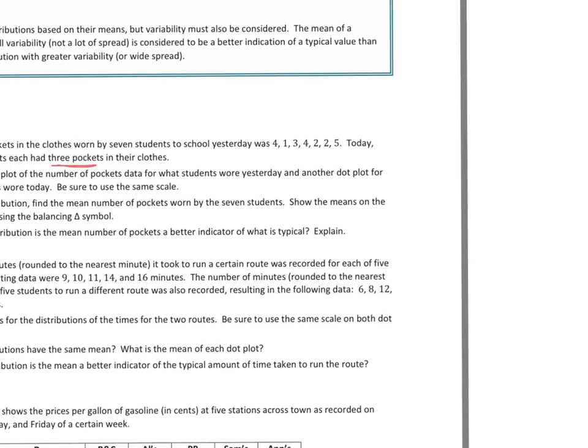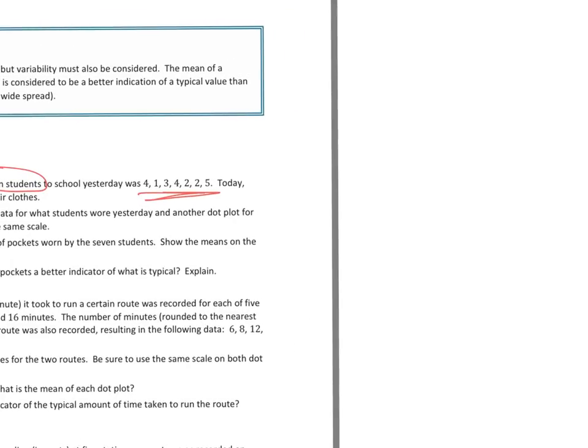So, I know I have one where they have 3 pockets, I know that there's 7 students, and I know that this is yesterday. So I'm going to draw 2 of these and I'll label those. We'll say yesterday, and I know I've got to start with 1, 2, 3, 4, 5, and I can count how many 1's there are, and there's 1. There's 2's, 3, 4, and 5.